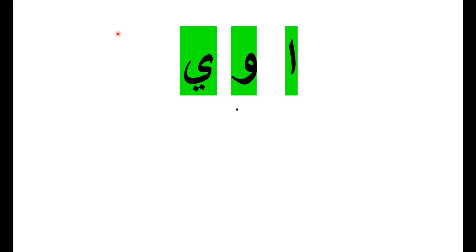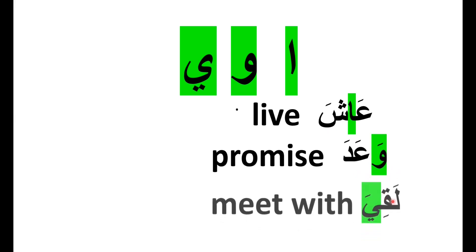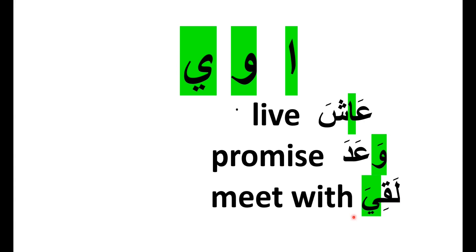A weak verb, الفعل المعتل, is a verb that has one or two weak letters in its root. The weak letters are Alif, Waaw, and Yaa. Examples of verbs carrying a weak letter: عاش, live; وعد, promise; and laqiy, meet with. A sound verb, الفعل الصحيح, does not have those three letters in its root. For example, ذهب, go.